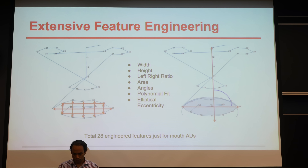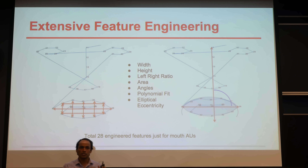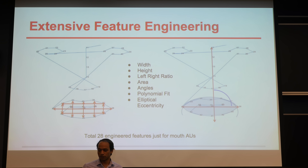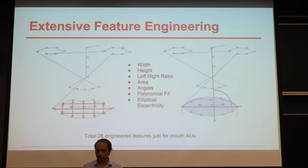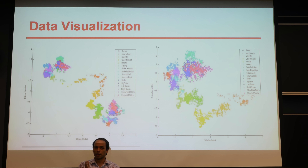Coming to feature engineering — on the left side you can see we compute a lot of features for the lips. This is just for mouth-based; we have others too. We use area of the lips, polynomial fitting, and angle between nose and lips — all different feature engineering approaches we tried. For each of these, we visualize the data to see if they help, and then go back and redo the feature set.